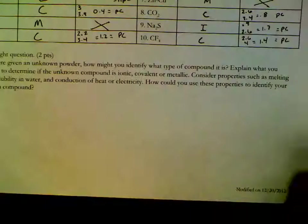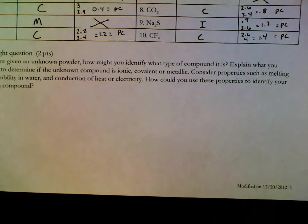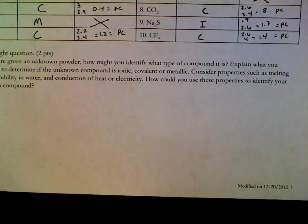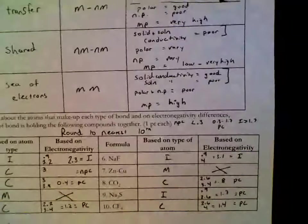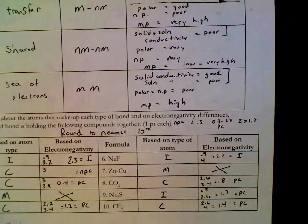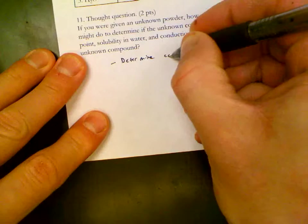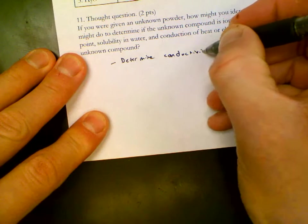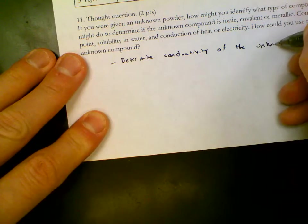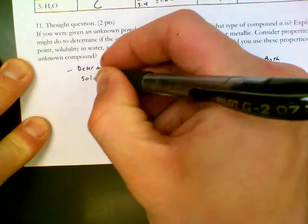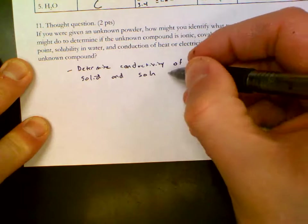The last question says, if we were given an unknown powder, how might you identify what type of compound it is? Explain what you might do to determine if the unknown compound is ionic, covalent, or metallic. Consider properties such as melting point, solubility in water, and the conduction of heat or electricity. So we said earlier that the top property, top characteristic, conductivity, is the most important. So we would want to say, determine the conductivity of the unknown in both solid and solution format.